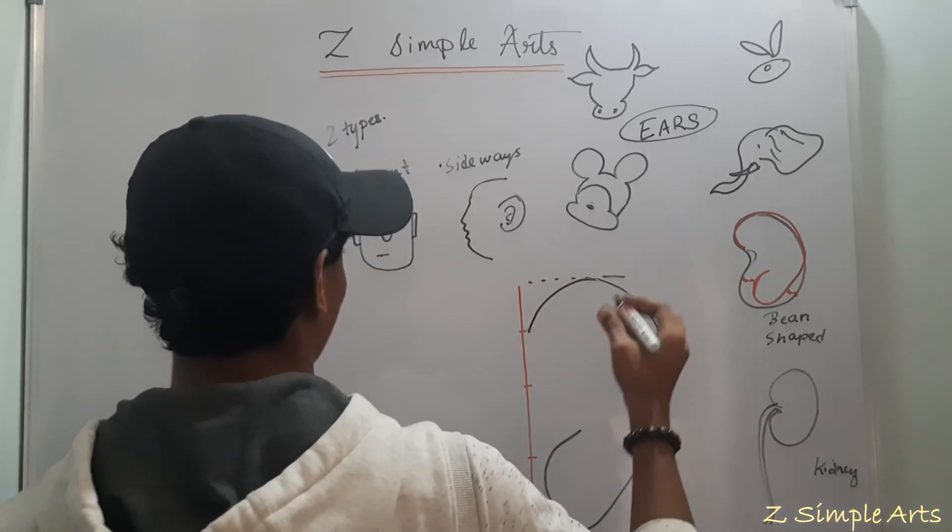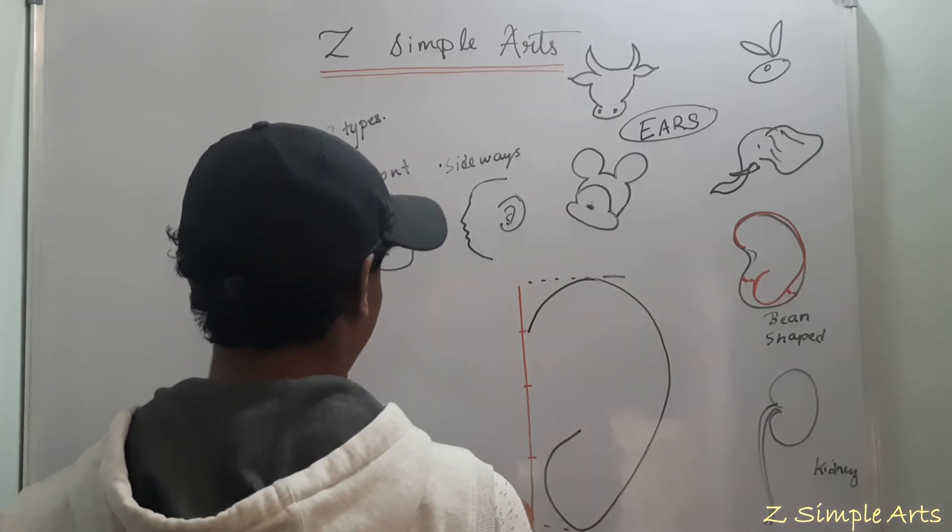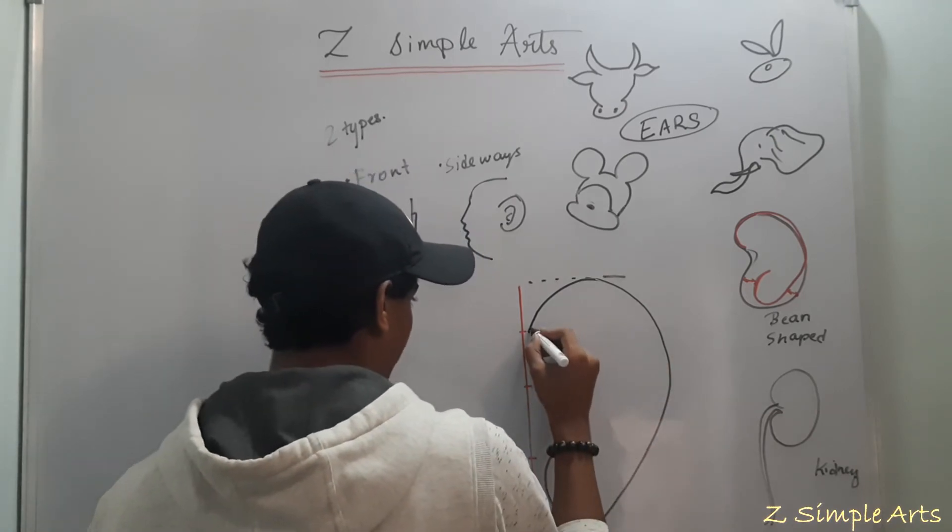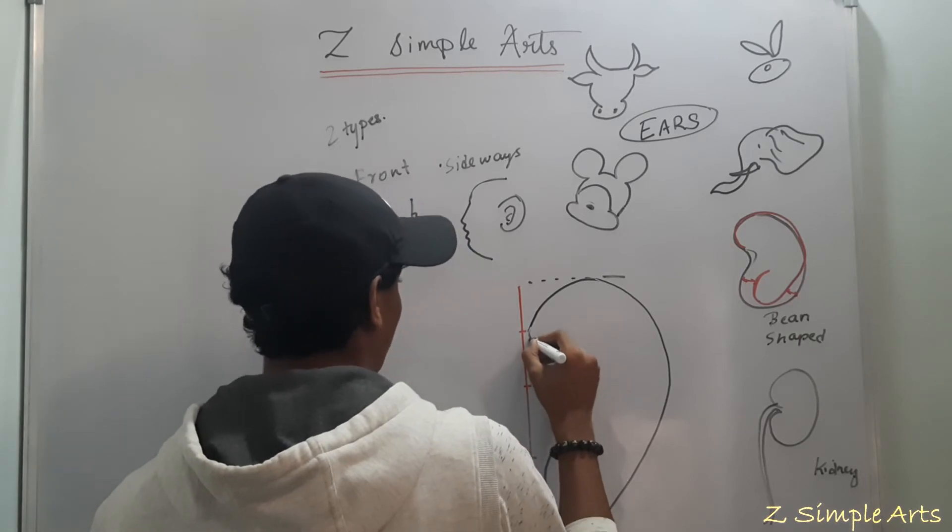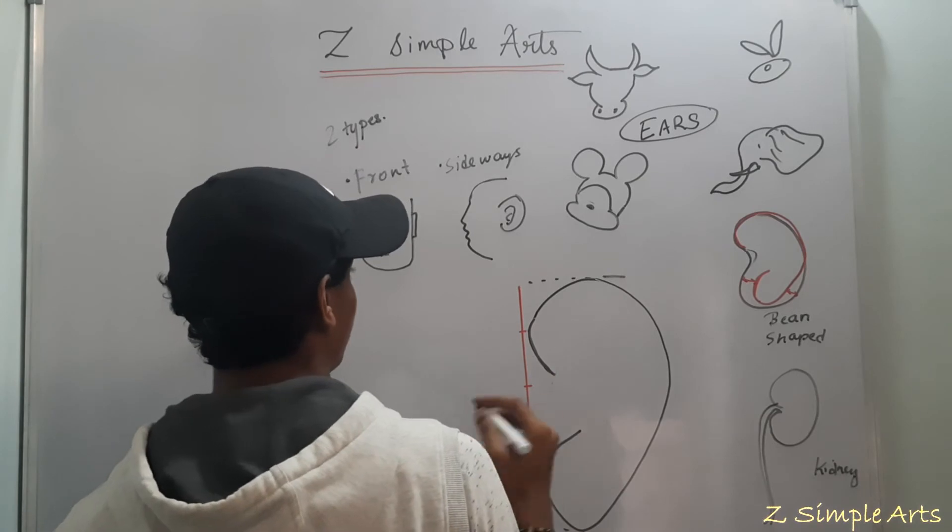So before we move on to applying shadow and light, we will focus on the outline. Once you get here, try to extend this inward.